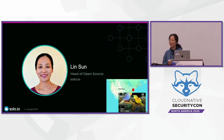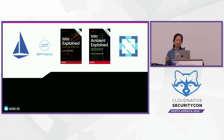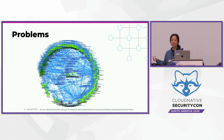My name is Lin Sang. I'm the head of open source at Solo.io, a small company based in Boston, and I live in Cary, North Carolina — that's where the house is. I'm one of the founding members of the Istio project. I worked at IBM for 19 years, contributed to 207 patents, and wrote two books about Istio. I'm also a CNCF ambassador and a TOC member.